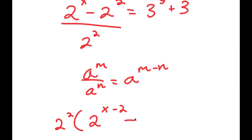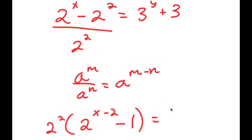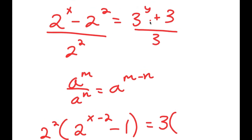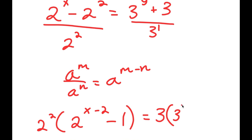Then I have minus 2 squared divided by 2 squared, which is minus 1. On the right hand side, I divide by 3. Since 3 is 3 to the power of 1, I get 3 to the power of y minus 1, and 3 divided by 3 is 1, so I get plus 1.